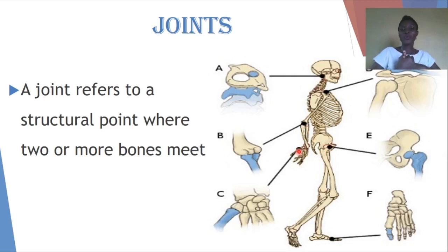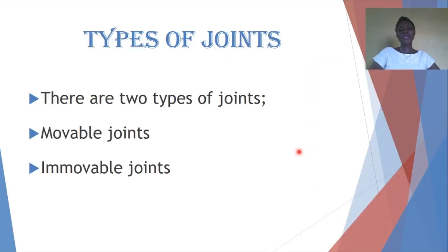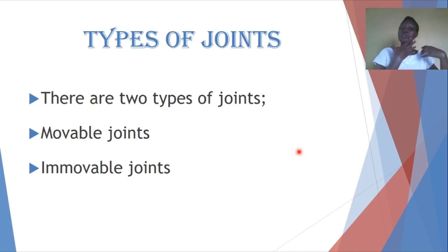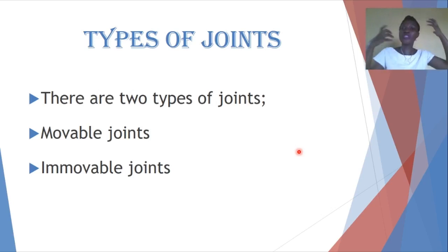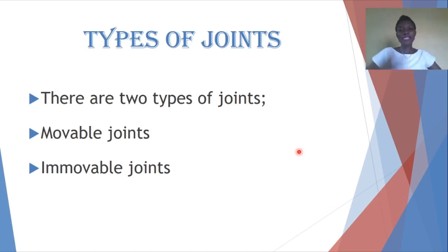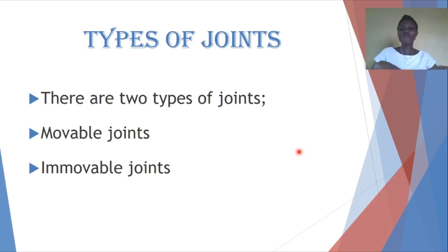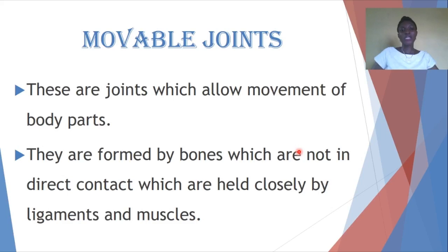We have two types of joints: movable joints and immovable joints. In our previous lesson I made reference to the fact that you cannot move parts of your skull such that the upper part of your head moves independently. This type of joint which cannot move freely, or where there is little movement occurring, is what is known as an immovable joint.